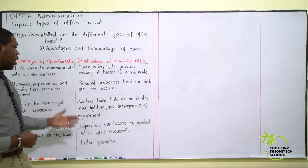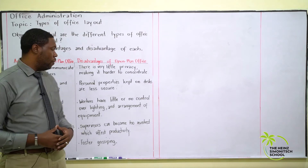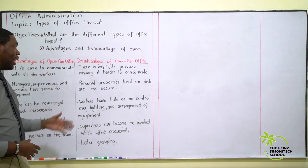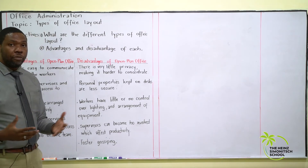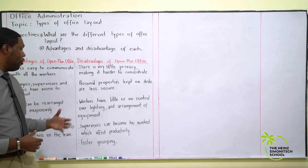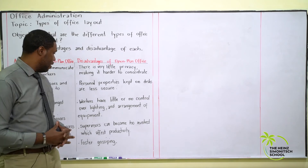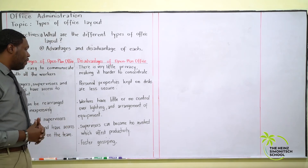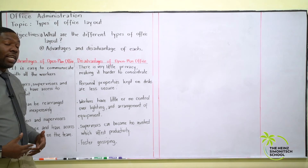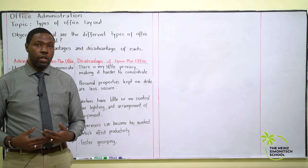Workers have little or no control over things such as lighting, temperature, or the arrangement of equipment. Additionally, supervisors can become too involved, which can affect productivity.